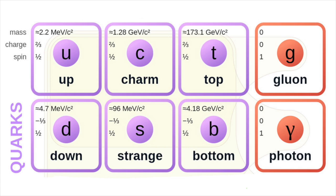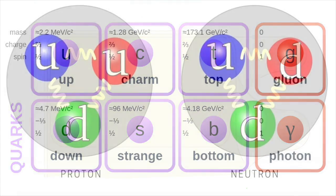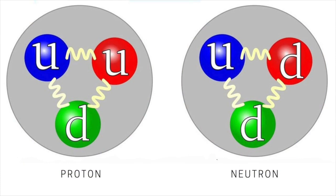Subsequent experiments convinced physicists that not only do quarks exist, but there are six of them, not three. Evidence for three different quark-like constituents of protons and neutrons became clear in the late 1960s and 1970s. In 1974, a new particle was unexpectedly discovered at Stanford Linear Accelerator Center. It was given the dual name J-psi because of its simultaneous discovery by two groups of experimenters. The J-psi was later shown to be a bound state of a new quark-antiquark pair. The new fourth quark was named charm.